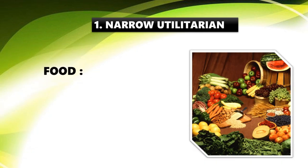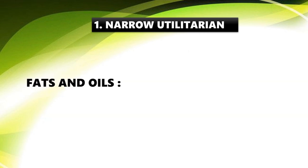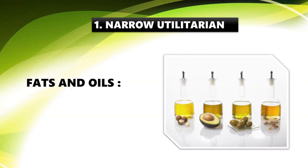All the food we eat comes from plants and animals — cereals, pulses, fruits, vegetables, milk, eggs, and meat. There are many medicines derived from plants and animals. These are all direct benefits of biodiversity.